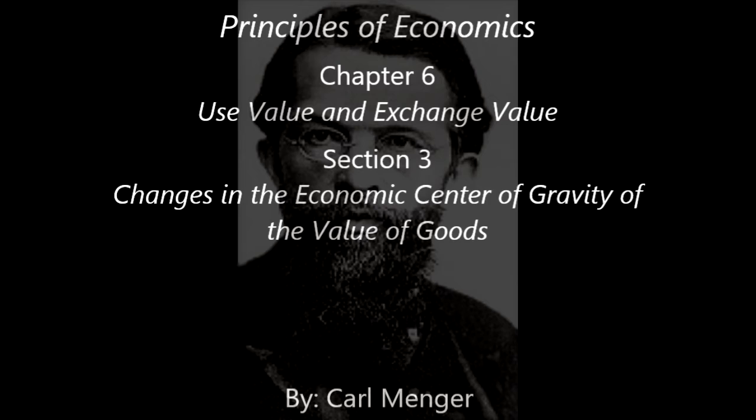Two: mere changes in the properties of a good can shift the center of gravity of its economic importance if its use value to the possessor is altered by the change, while its exchange value either remains unchanged or does not rise or fall to the same extent as its use value. Clothes, horses, dogs, coaches, and similar objects usually lose their use value to wealthy people almost entirely if they have an externally visible defect. Their exchange value, although also decreased, comes to the fore in importance since the loss in their use value is usually greater than the loss in their exchange value. On the other hand, goods become altered in many instances in such a way that their exchange value, which previously was the economic form of value to the economizing individuals possessing them, recedes as compared with their use value.